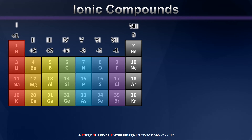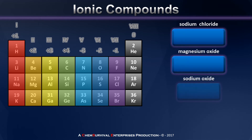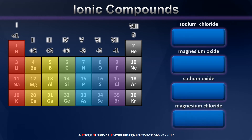Now that we have an idea of how to predict which charge each element will take, and exactly how many electrons it will be most likely to accept or let go of, let's try to predict the formula for a few compounds — specifically sodium chloride, magnesium oxide, sodium oxide, and magnesium chloride. Sodium chloride we just did, in which we have sodium with a plus one charge and chlorine with a minus one charge. A trade of a single electron leads to a compound in which the ratio of sodium and chlorine atoms is one to one.